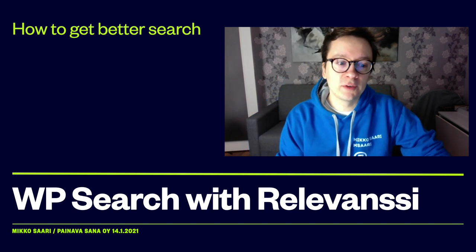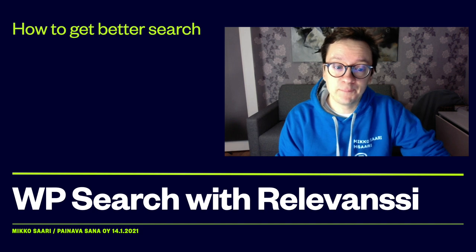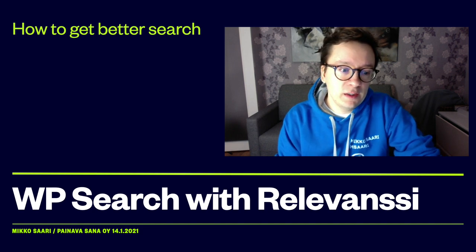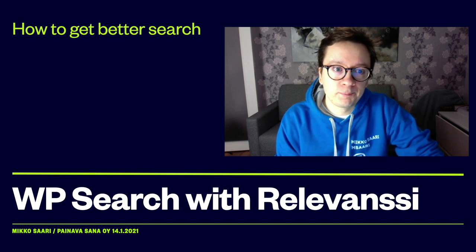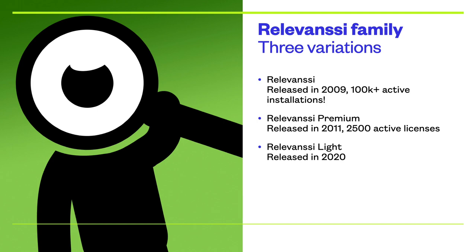Hi! I'm here to talk about WordPress search using Relevanssi. In case you're wondering, Relevanssi is Finnish for Relevanssi. It's a search plugin, and comes in three variations. The original free version was released in 2009 and has over 100,000 active installations today. The premium version was released two years later and is used by 2,500 active licenses. The newcomer in the family is Relevanssi Lite, which was released in 2020 and was developed based on an idea from Otto from Seravo.